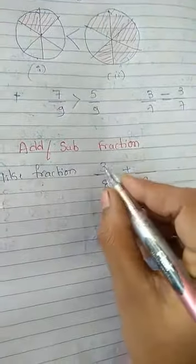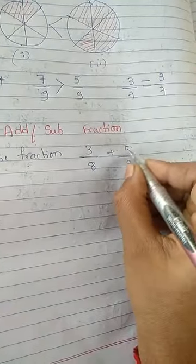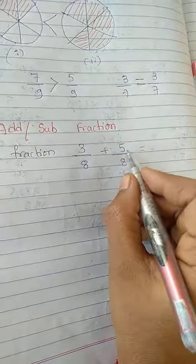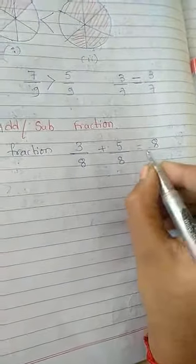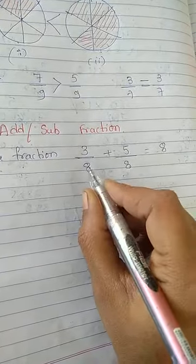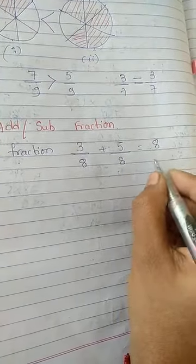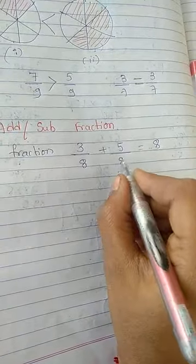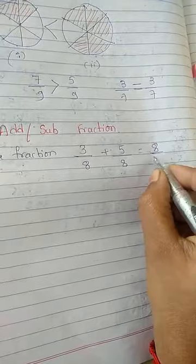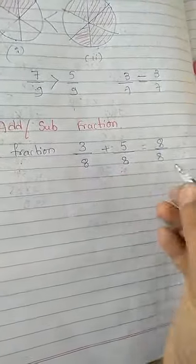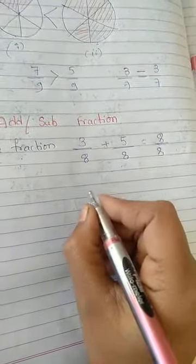Here if I take a fraction, 3 by 8 plus 5 by 8, it will be 3 plus 5 is equals to 8 by 8. When the denominators are same, don't add 8 plus 8 is equals to 16. Don't write here. That is completely wrong. The denominators are same. So we have to write denominator as it is. As it is means, how 8 is there? The same way we have to write 8.